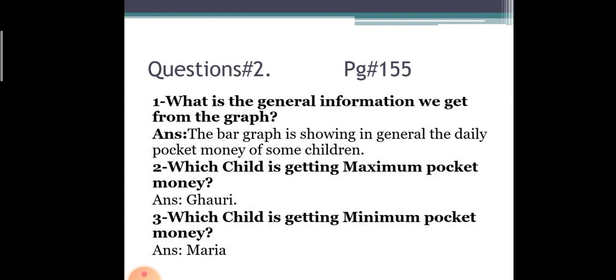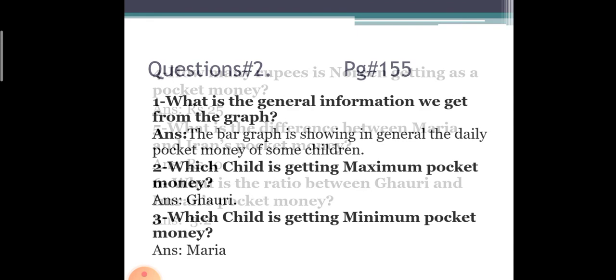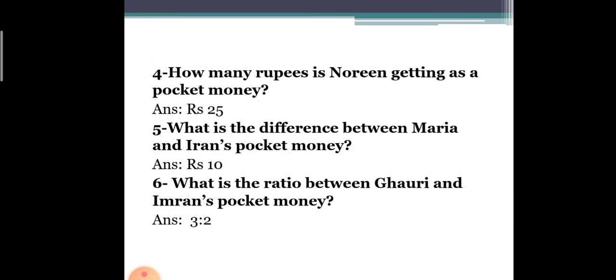Which child is getting minimum pocket money? Maria. Then, how many rupees is Noreen getting as pocket money? Noreen is getting 25 rupees.